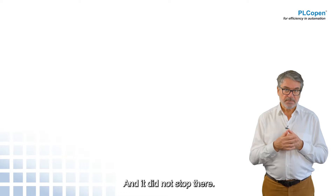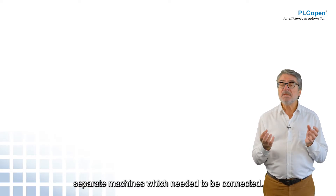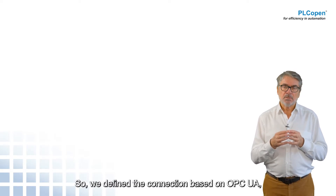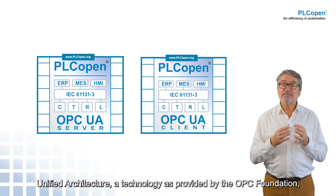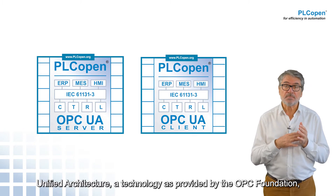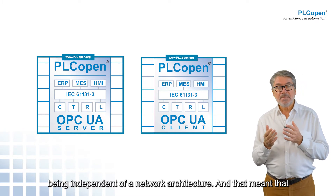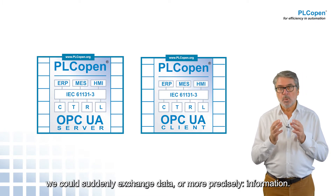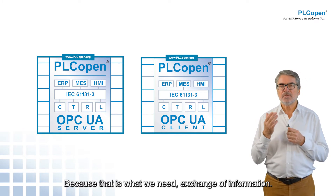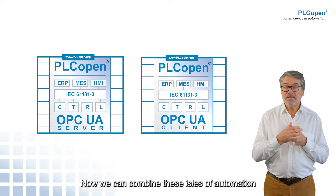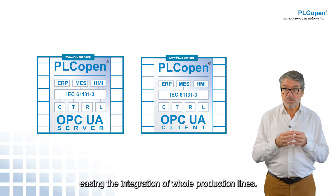It did not stop there. We realized that there were aisles of automation — separate machines — which needed to be connected. So we defined the connection based on OPC UA, Unified Architecture, a technology provided by the OPC Foundation, being independent of a network architecture. That meant we could suddenly exchange data, or more precisely, information — because that is what we need. Now we can combine these aisles of automation via communication between them, easing the integration of whole production lines.